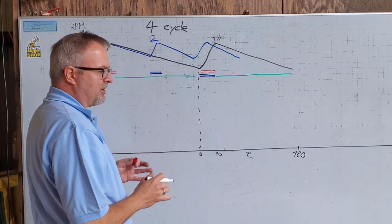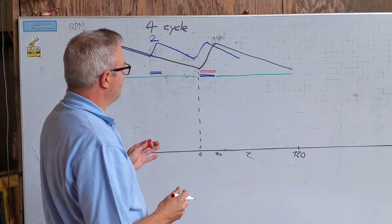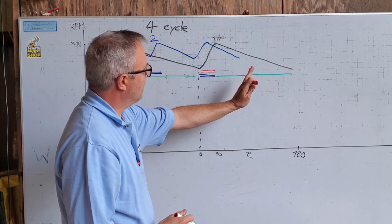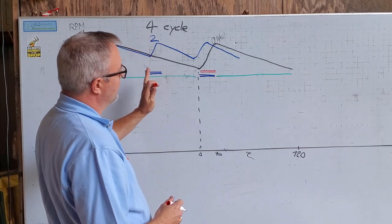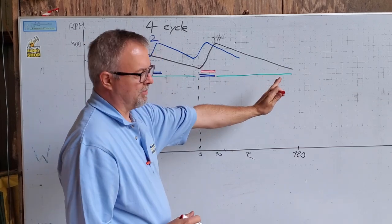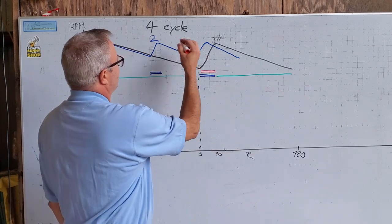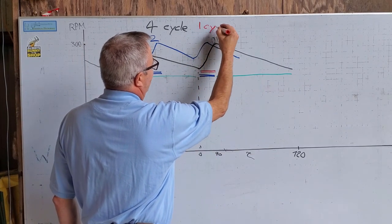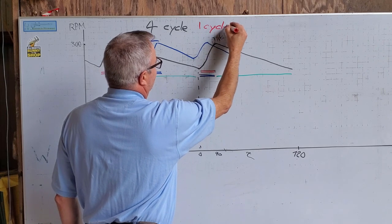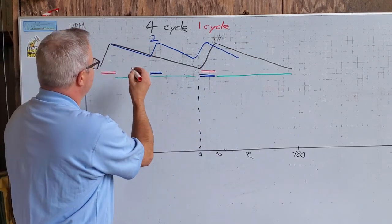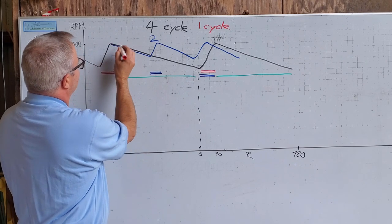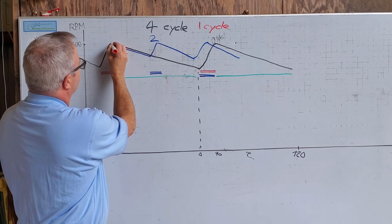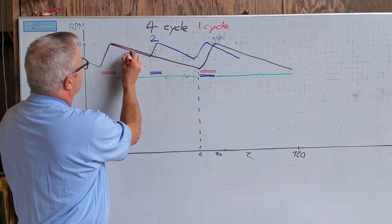Most steam engines are double-acting. That means they have pressure on the front side of the piston in one stroke and on the back side of the piston in the return stroke. So does that mean that this is a one-cycle? I don't know, I've never really heard it called anything but a steam engine is going to be cut in half again.